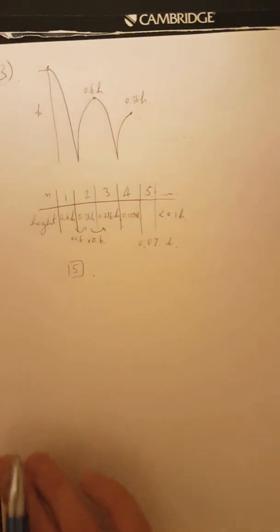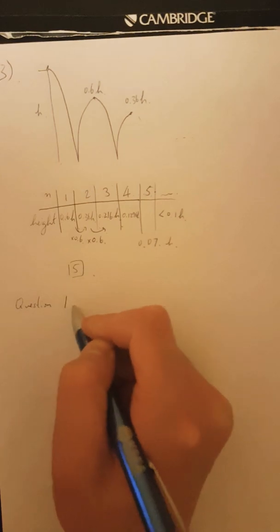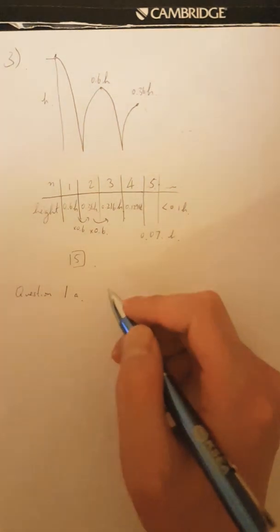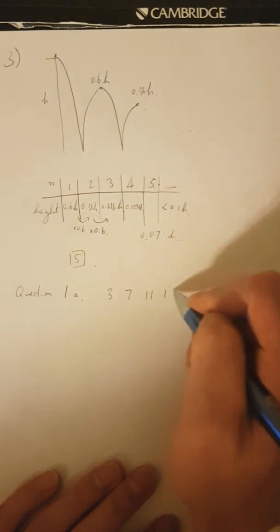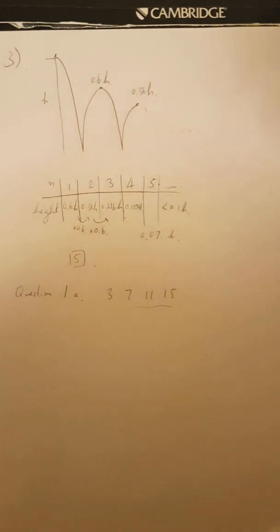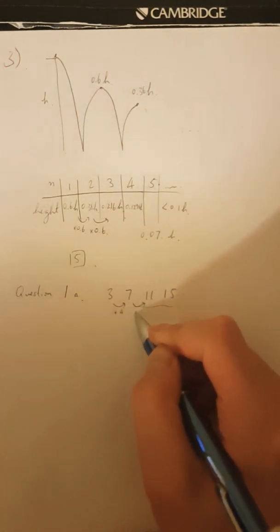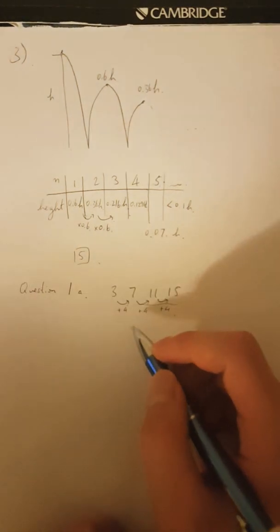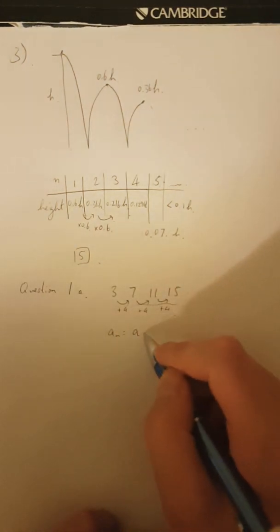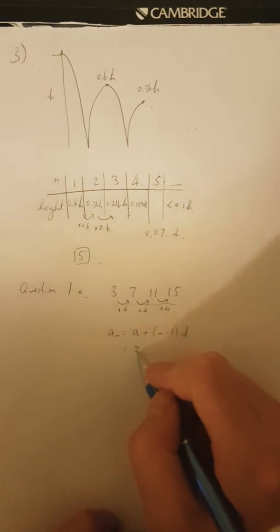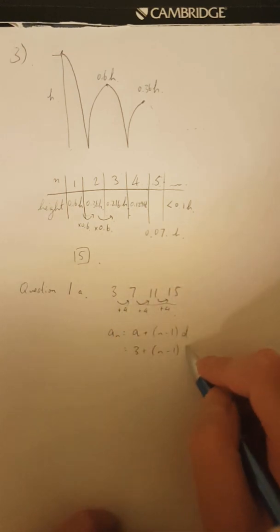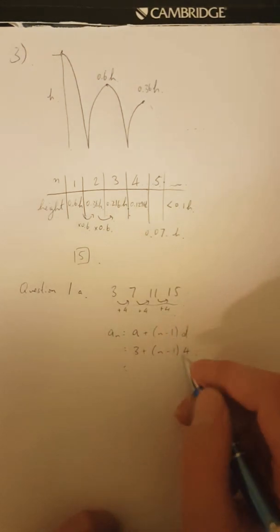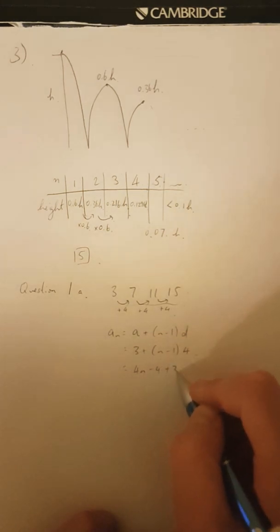So this is going to be a solution walkthrough. Question one is basically: look at the table and write down the explicit and recursive forms. For question one A, you can identify that this is an arithmetic progression with a common difference of four. So the explicit form is going to be the formula A plus N minus one times D, where A is the first number and D is the common difference, which is four.